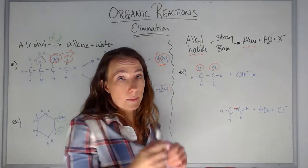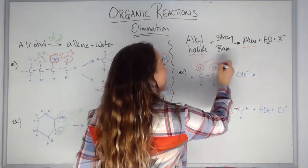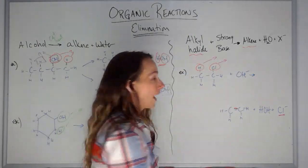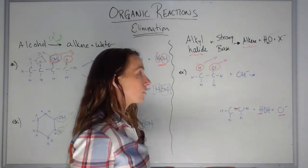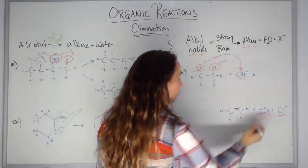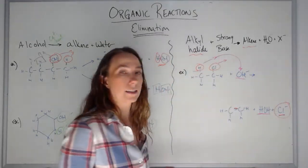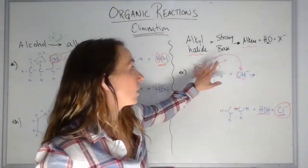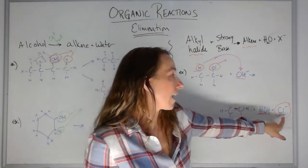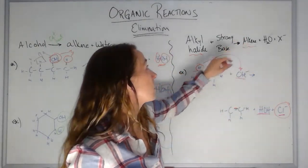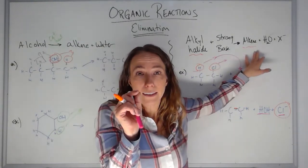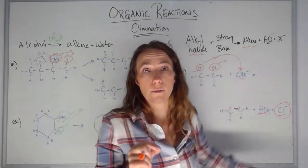The most common mistake is thinking that, just like water, the H and Cl should come together to make HCl — but they don't. They're separate. The H actually prefers its bond with the OH⁻, so you get HOH (water) formed, and the Cl⁻ ends up free by itself. So I let go of the neighboring H, form the double bond, and end up with water and the free halide ion. That's an alkyl halide plus a strong base forming an alkene, water, and a halide ion.